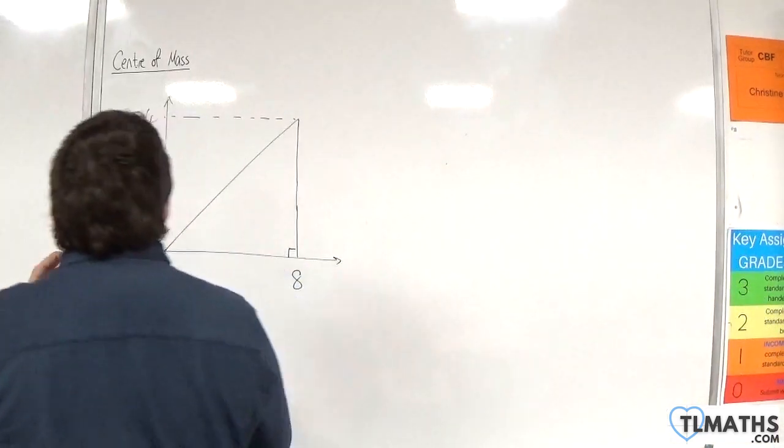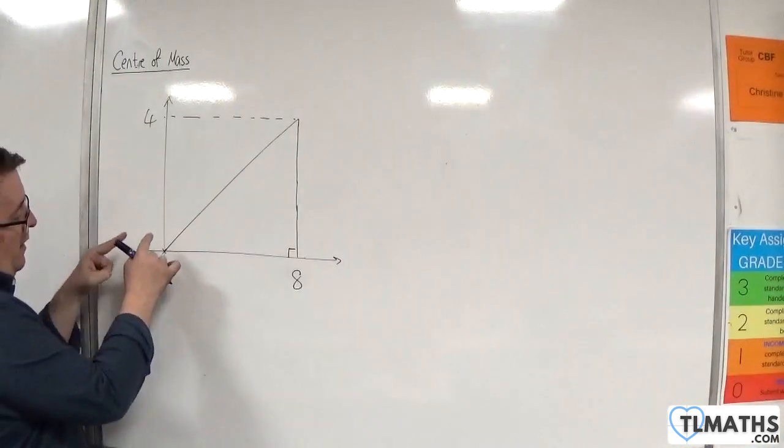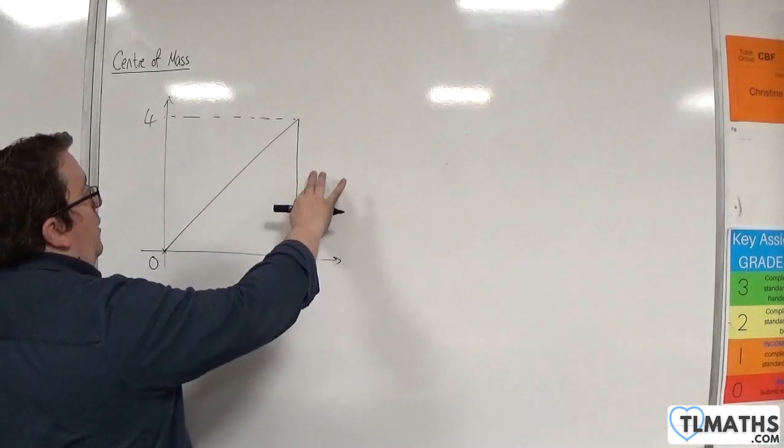Now, the centre of mass is going to be two-thirds of the way along the line from O to the midpoint of this side.